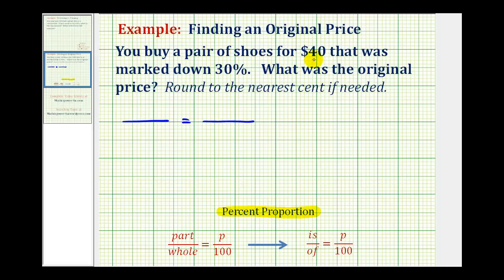Well, the $40 is the discounted price, so that represents the part. The whole price, the original price, is the unknown. So this ratio compares the discounted price to the original price.